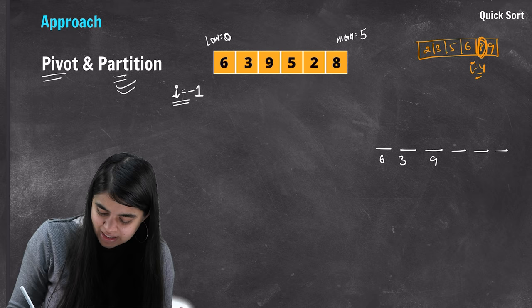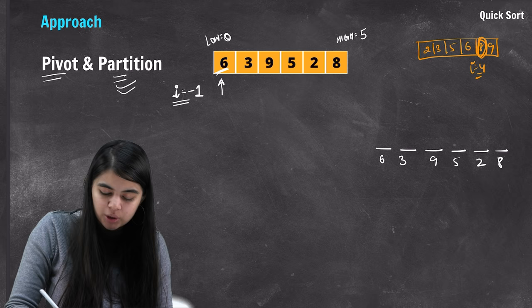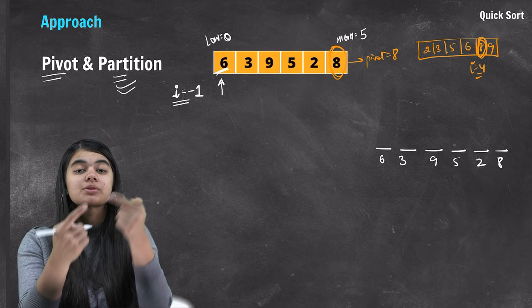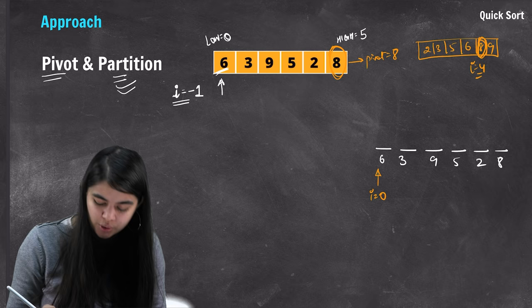The first step is to go to the first element, which is 6. Now 6 will be compared with the pivot, which is 8. So 6 is smaller than pivot 8. So i will increment to make space for this element. I will create a gap — the small element will be placed there. We increment i and then do a swap: the element at position i and the current element get swapped.